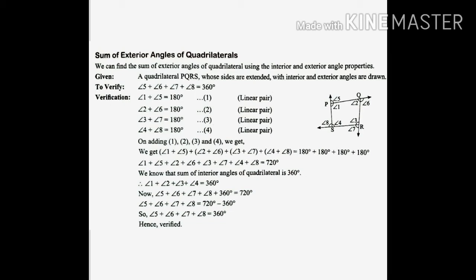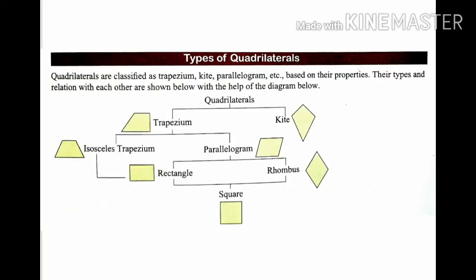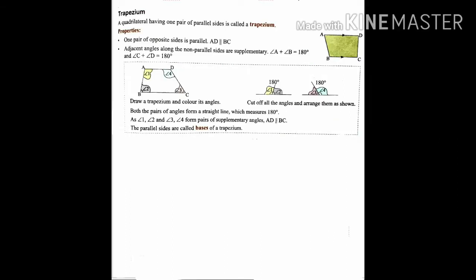The sum of exterior angles of a quadrilateral is 360 degrees. Now, the types of quadrilaterals: trapezium, kite, isosceles trapezium, parallelogram, rectangle, rhombus, and square — approximately seven types. There are further sub-parts under some types. In this topic, we will discuss trapezium, isosceles trapezium, kite, and parallelogram.